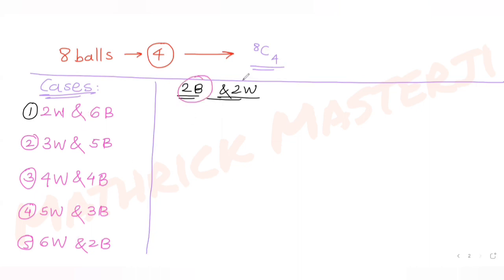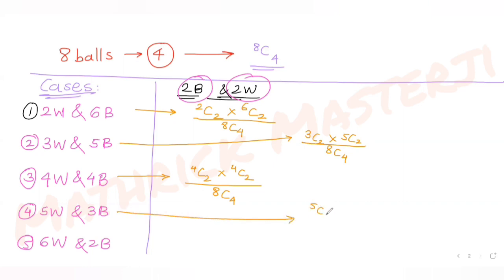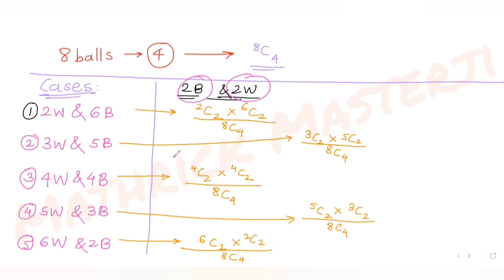For each case, we pick two black and two white balls. Case 1: (2C2 × 6C2) / 8C4. Case 2: (3C2 × 5C2) / 8C4. Case 3: (4C2 × 4C2) / 8C4. Case 4: (5C2 × 3C2) / 8C4. Case 5: (6C2 × 2C2) / 8C4. These are the probabilities for all five cases.